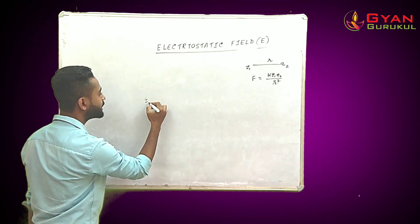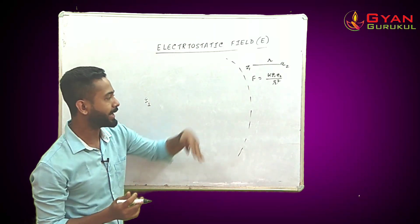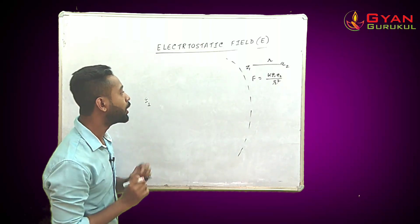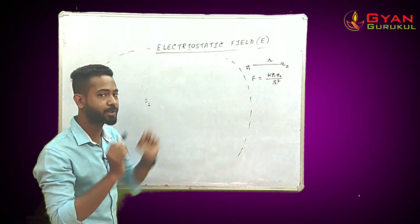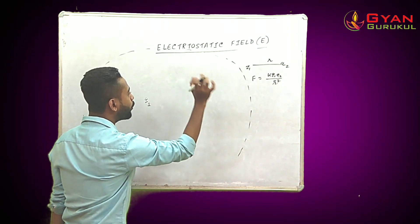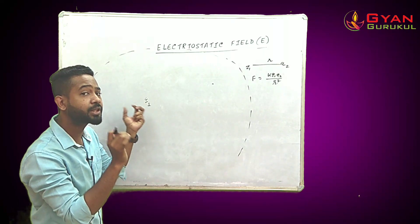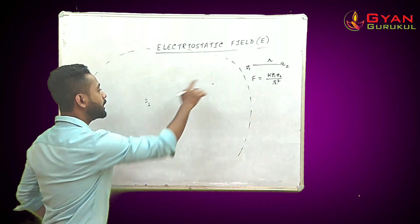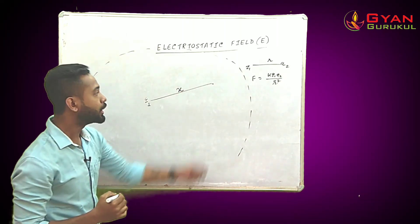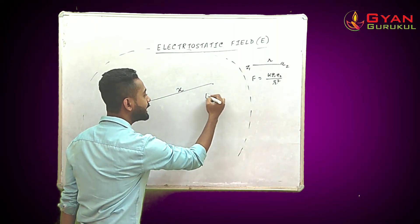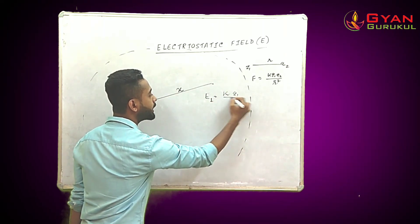Consider a charge q1 — it has a region around it where any secondary charge placed inside that region will experience a force. For any point in this surrounding region at distance x from q1, we need to find the exact force and field at that point. The expression for the electric field at distance x is given by k q1 / x squared.